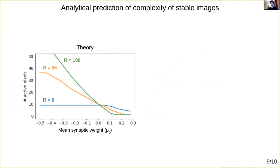This reasoning allows one to analytically predict the complexity of images stabilized by the network, which we can see increases with more negative mean synaptic weights, as well as with a total number of pixels in the network. And when we compare the theory to simulation, we see that our theory captures these dependencies in R and mu naught.